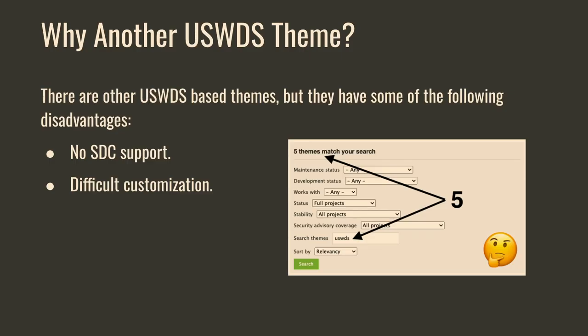Why did we decide to create another USWDS theme? Right now, if you go to drupal.org and search USWDS, you'll find other USWDS-based themes. But we found limitations — in general, they are not supporting single directory components because this is pretty new. When we tried to convert existing ones to use single directory components, we found the way they were structured made it really difficult to customize. You needed to go to multiple places to change a background or primary color. So at the end, we said we need to start from scratch.